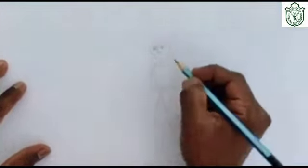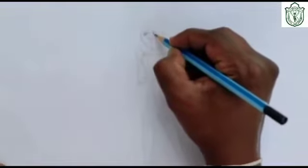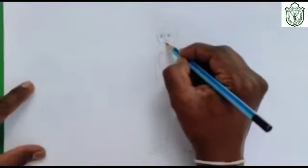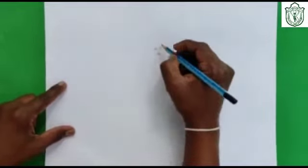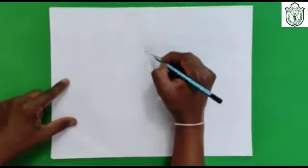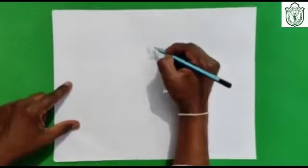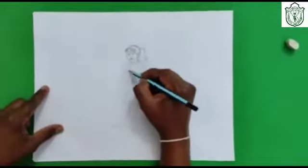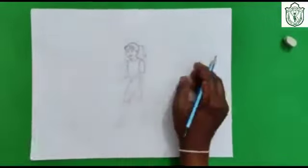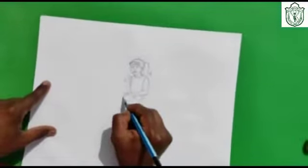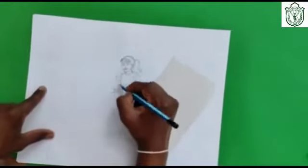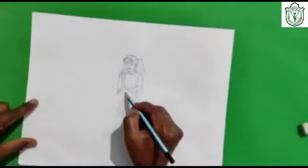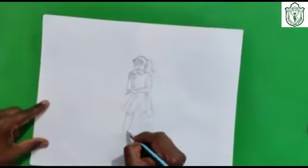First draw eyes, nose, lips, ear and hair style. Then draw hand movement and finger detail. Simultaneously draw dress of a girl and leg with shoe accordingly.